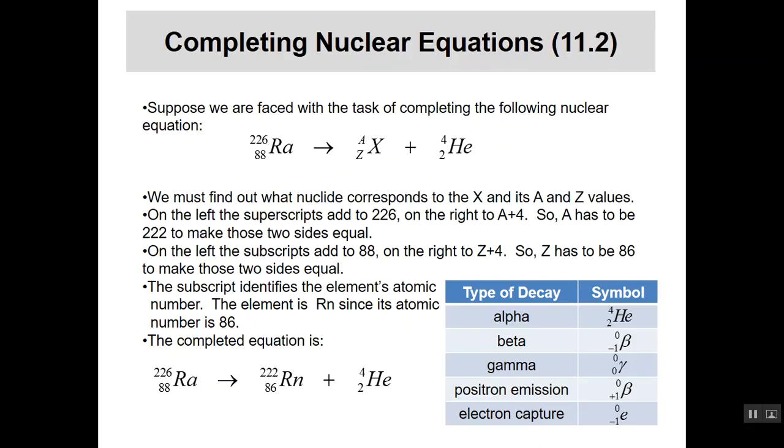So here's the equation. We've got radium. We're on the left-hand side. We're making some X. We don't know what that is. Some element, and we have an atomic number Z for it, and we have a mass number A for it, and then we have an alpha particle we've emitted. And so we need to figure out what that missing species is going to be. So what do we do? We look at the superscripts, and on the left-hand side, the radium adds up to 226.